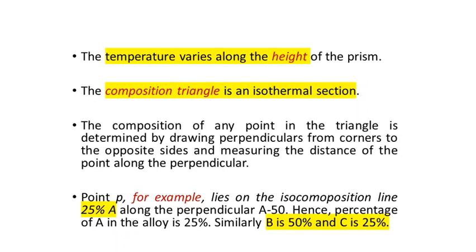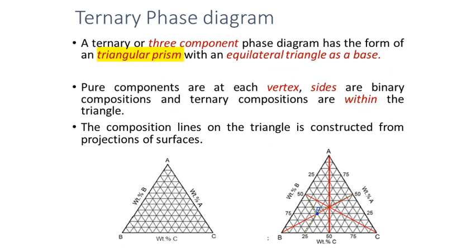To find the composition of a particular point within the triangle, for example an arbitrary point P shown on figure two, which represents an isothermal surface where temperature remains constant throughout, we need to find the composition of element A, element B, and element C at point P.